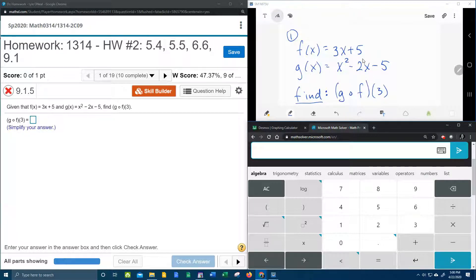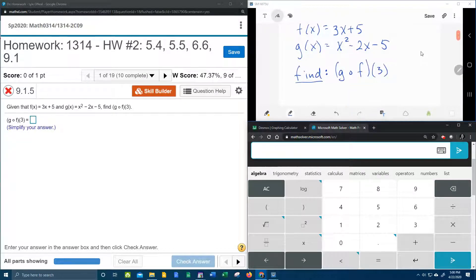And so what I've done is I've written the problem up here in my screen so we can work on it. Let's get started. The very first thing that you want to do is you want to rewrite this circle notation, this little circle means composition, you want to rewrite that using nested parentheses.